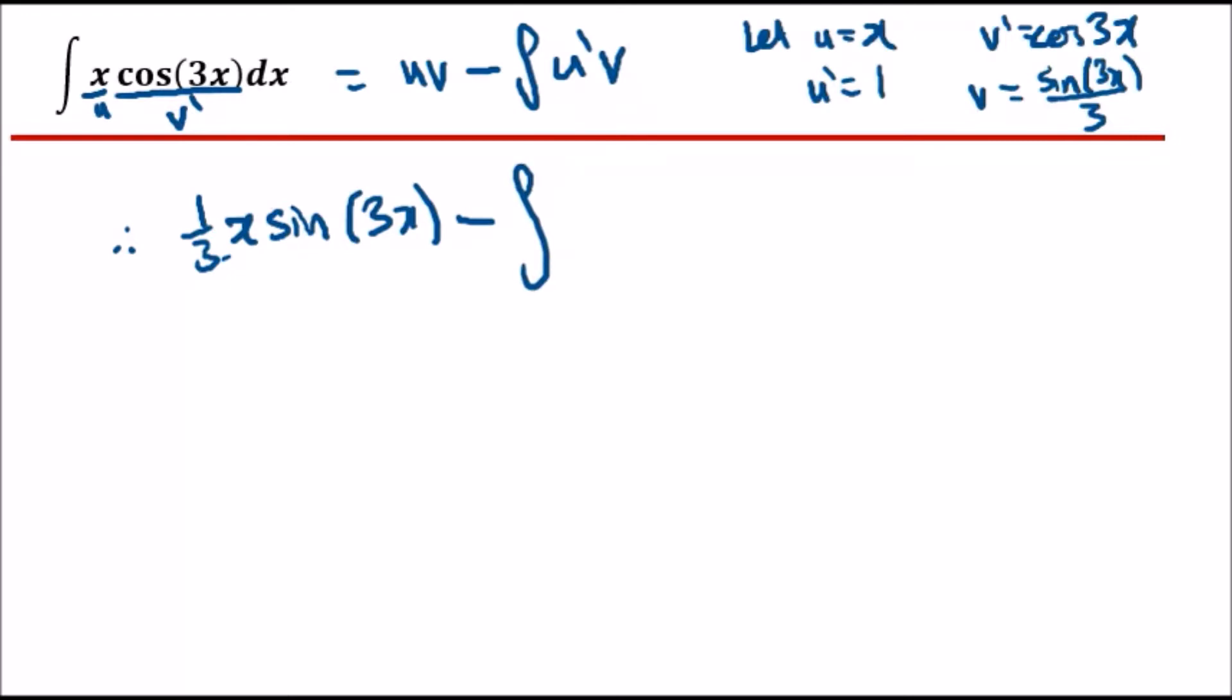u prime is 1 times v, so 1 times sine(3x) over 3. I'll just take a third outside, so it's going to be a third integral of...